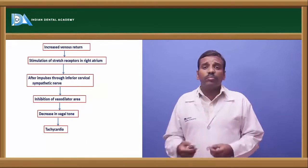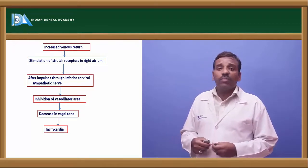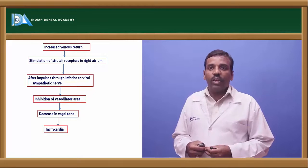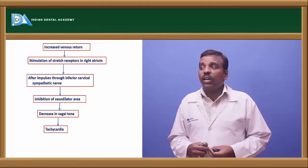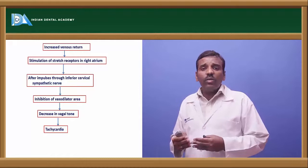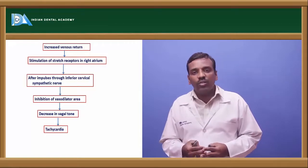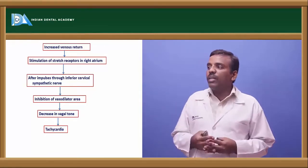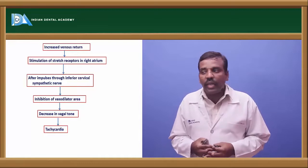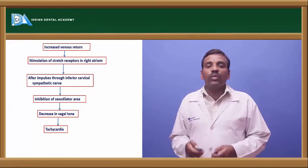The Bain-Bridge reflex: when there is bradycardia, increased venous return stimulates stretch receptors, afferent impulses travel through the inferior cervical sympathetic nerve causing inhibition of the vasodilator area, decrease in vagal tone, and resulting tachycardia. Vagal tone is maintained by respiratory centers, cerebral cortex, posterior and lateral nuclei of the hypothalamus, chemoreceptors, and stretch receptors.